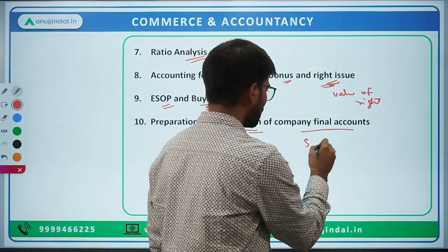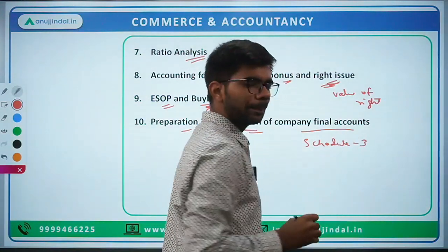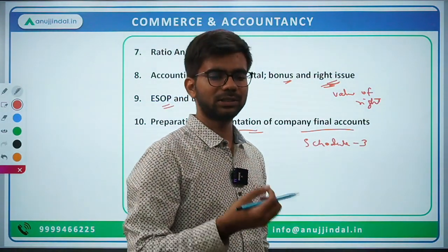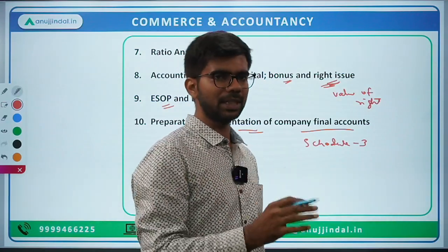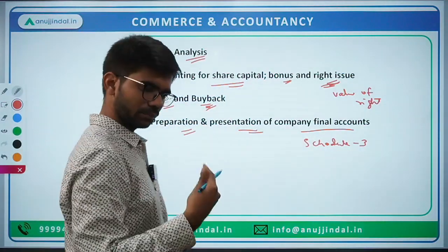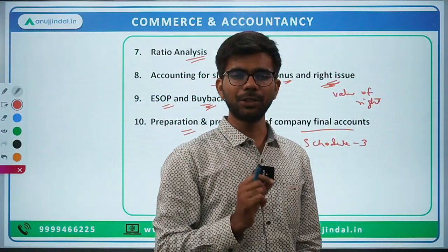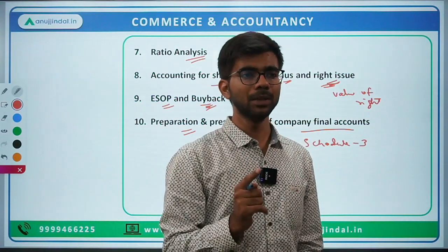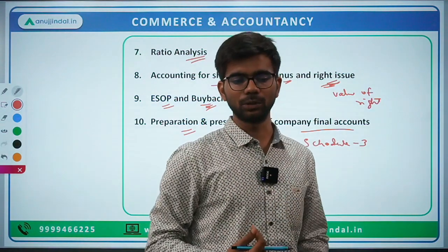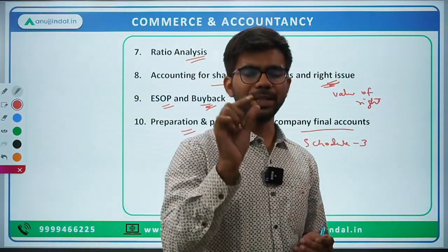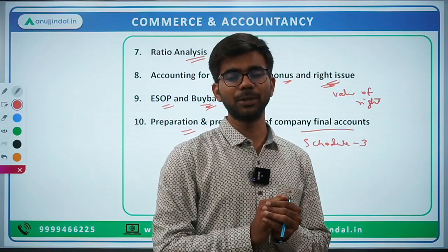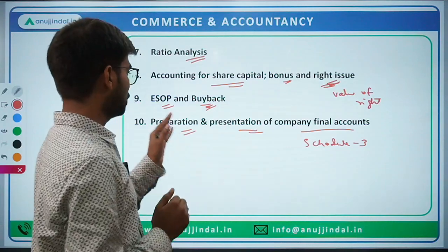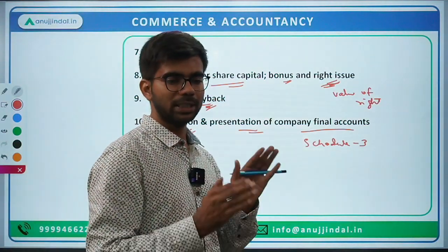This relates to Schedule 3 under the Companies Act 2013, which provides formats for the balance sheet, profit and loss statement, and statement of changes in equity. You should be aware of under which head a particular item would be shown in the balance sheet. Notes to accounts are very important — detailed descriptions are given there. Last year questions came from contingent liabilities and commitment items shown in the balance sheet footnotes. The format of the balance sheet and profit and loss is especially important.